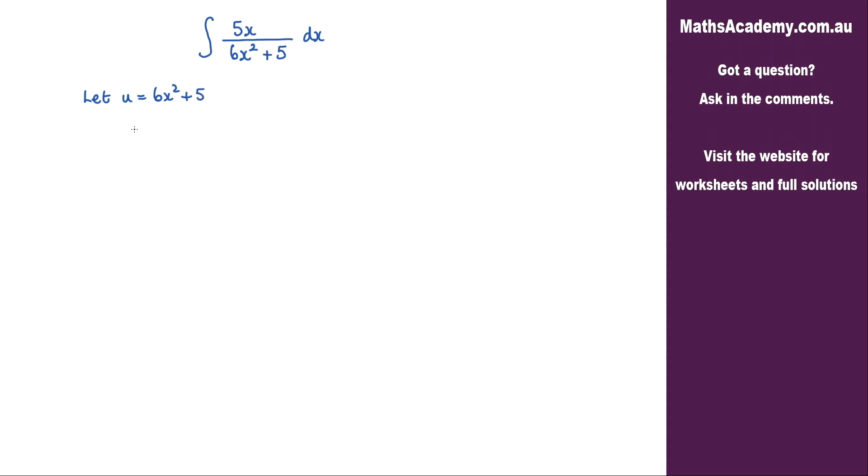I'm going to go ahead and differentiate this. So du by dx will be equal to 12x. And if I rearrange this, I'll get what dx is. So dx is equal to du over 12x.